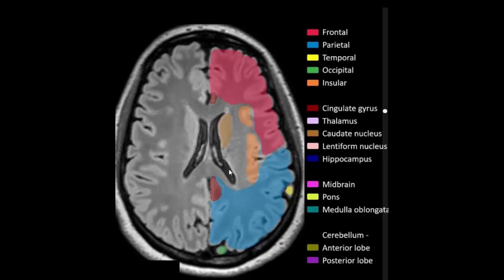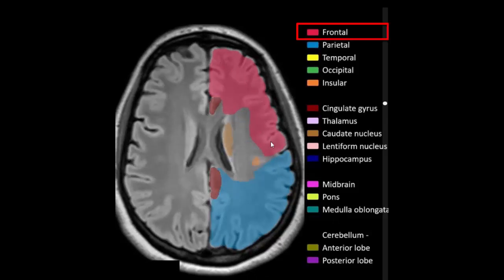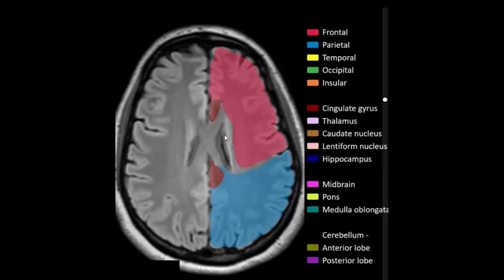Right and left body of lateral ventricle. White matter, gray matter. Frontal lobe, parietal lobe, body of caudate nucleus, cingulate gyrus, insular cortex. Parietal lobe, right and left body of lateral ventricle, cingulate gyrus. White matter, gray matter.